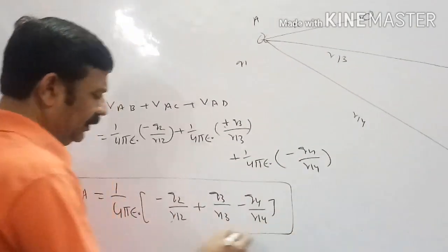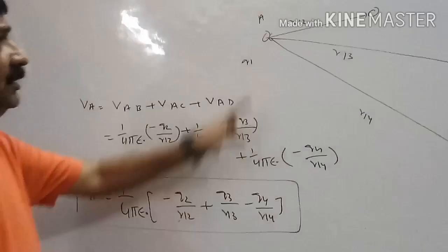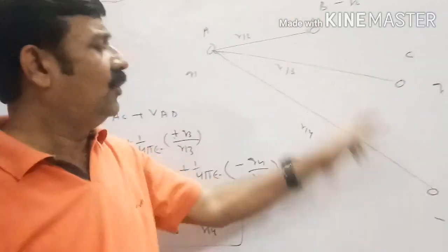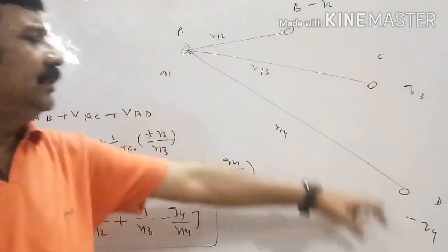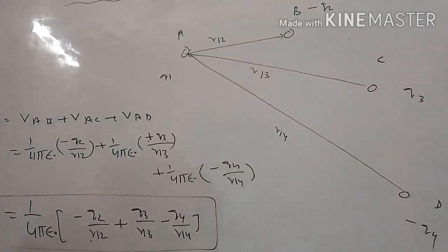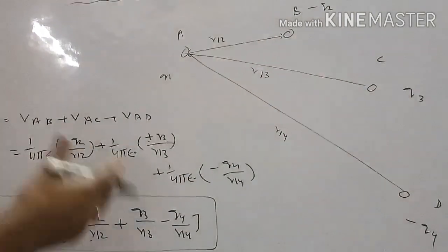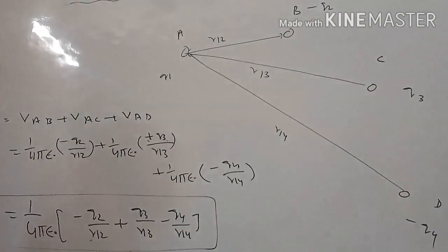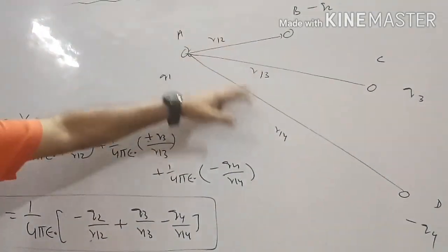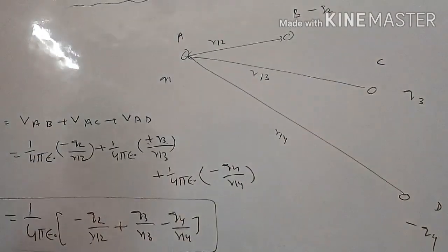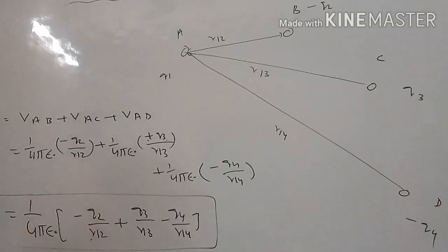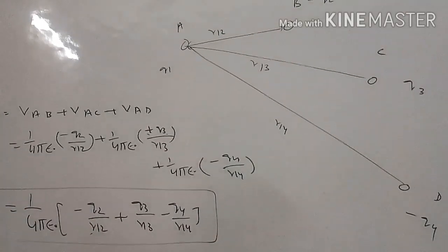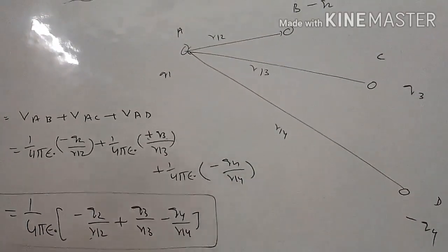If the distances are not given in the question but position vectors of the points are given, then using the class 11 vector method — specifically the triangle law — we first find the distances, and then substitute them into the formula. This is how we find the potential due to a system of charges at any point.